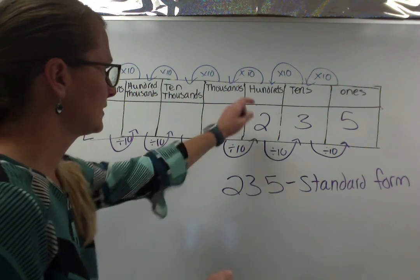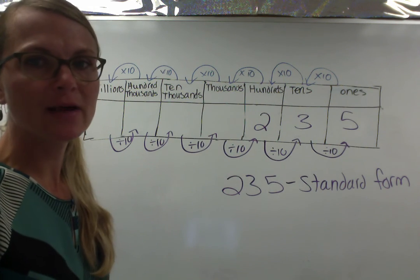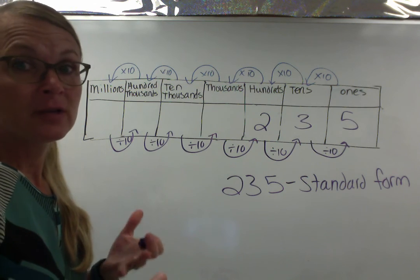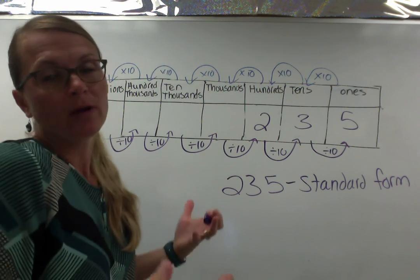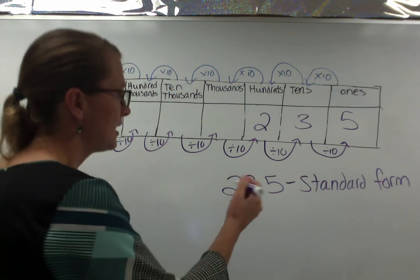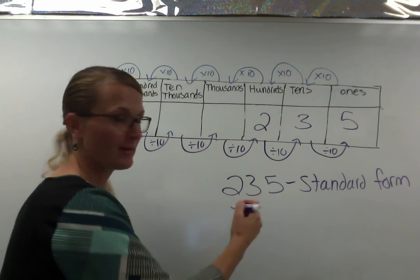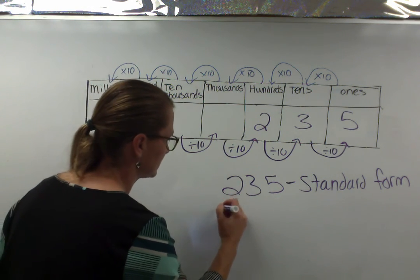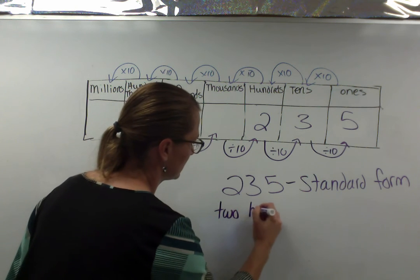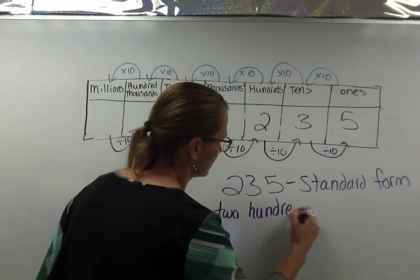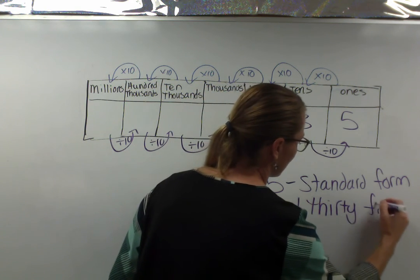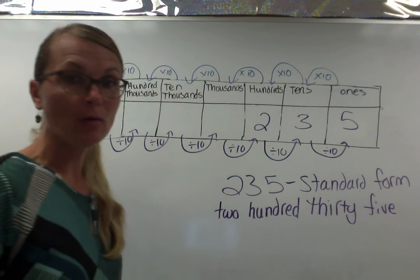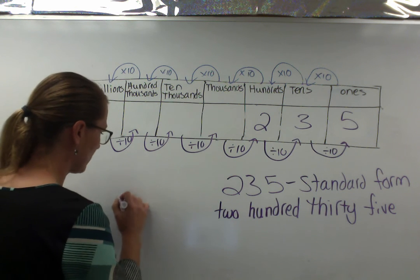If we then take a number and let's say we're writing, we're doing an assignment, we're doing some sort of written work, we're doing a report or research paper, and we want to write out that number. We'd say it's 235. We would write it out with words. So this is what we call the written form.